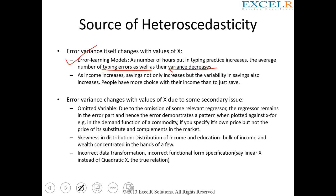Another example: as income increases, savings not only increase, but the variability in savings also increases. People have more choices with their income than just to save — they might go on a world tour or purchase luxury goods. So as income increases, savings increase and the variability also increases. These are two obvious reasons why heteroscedasticity might exist.